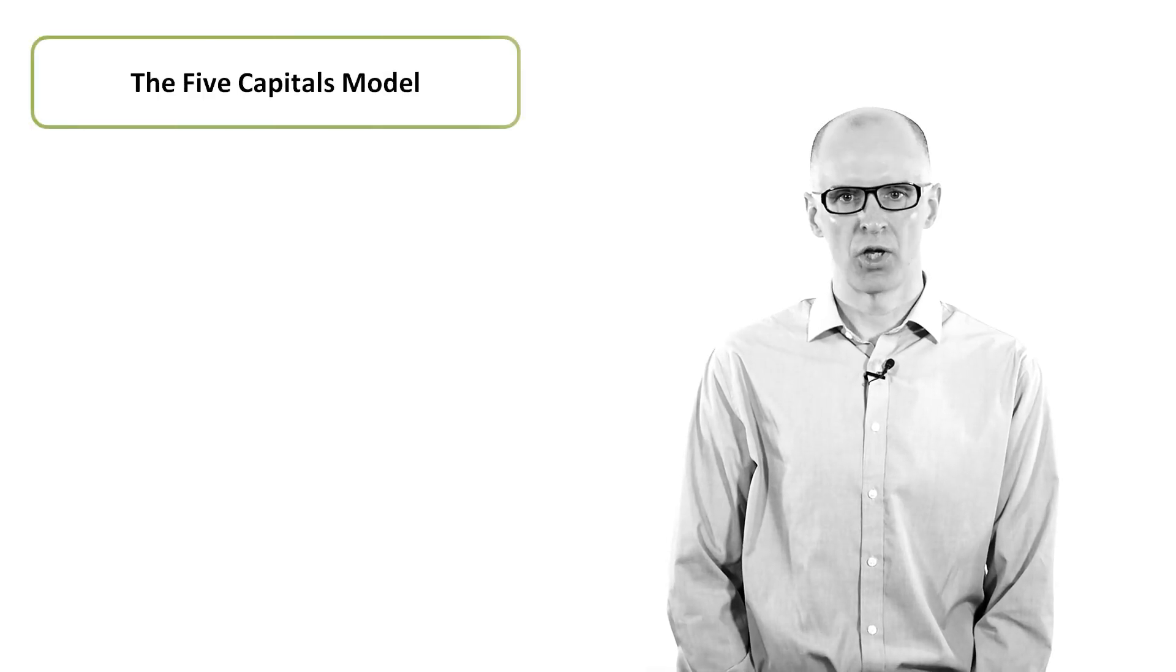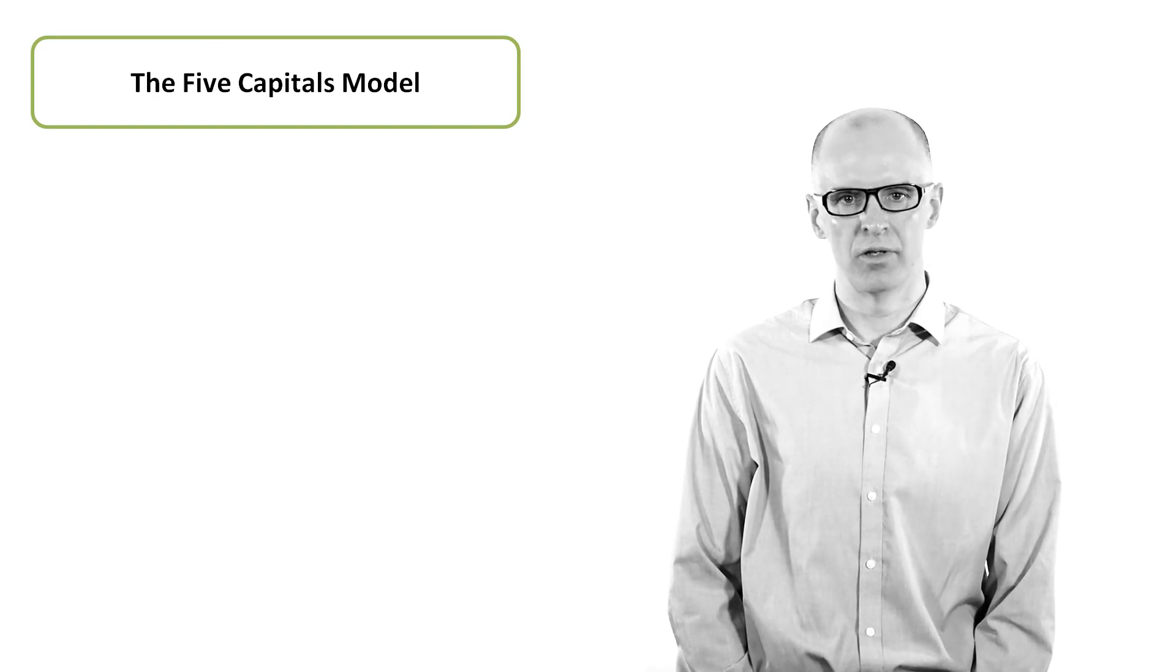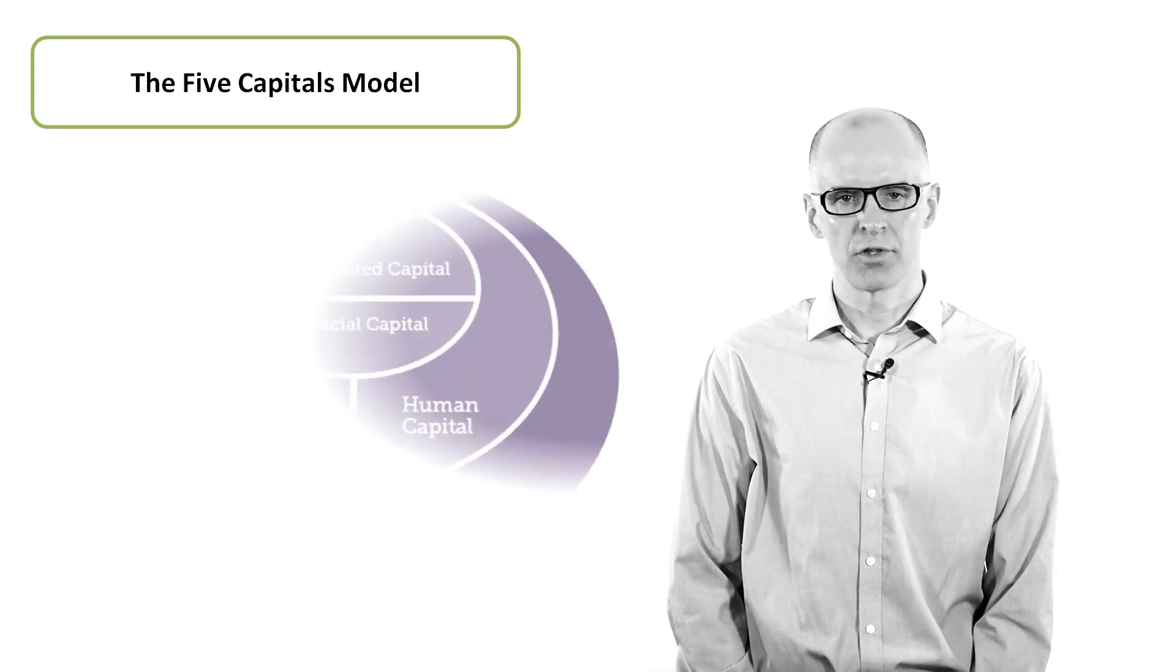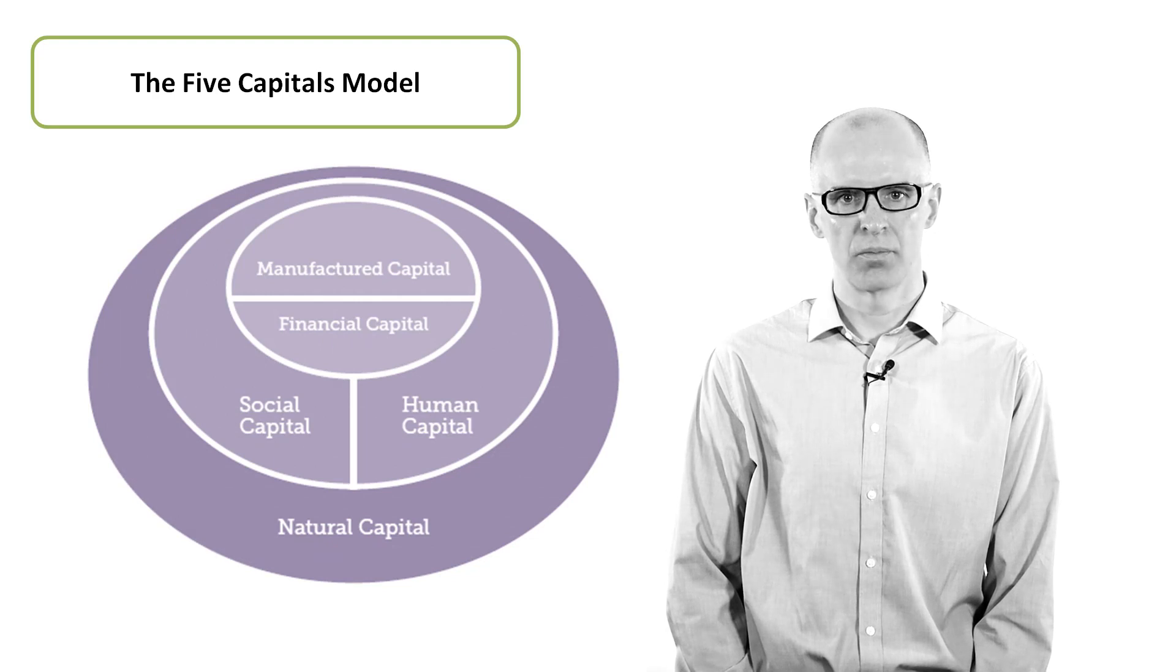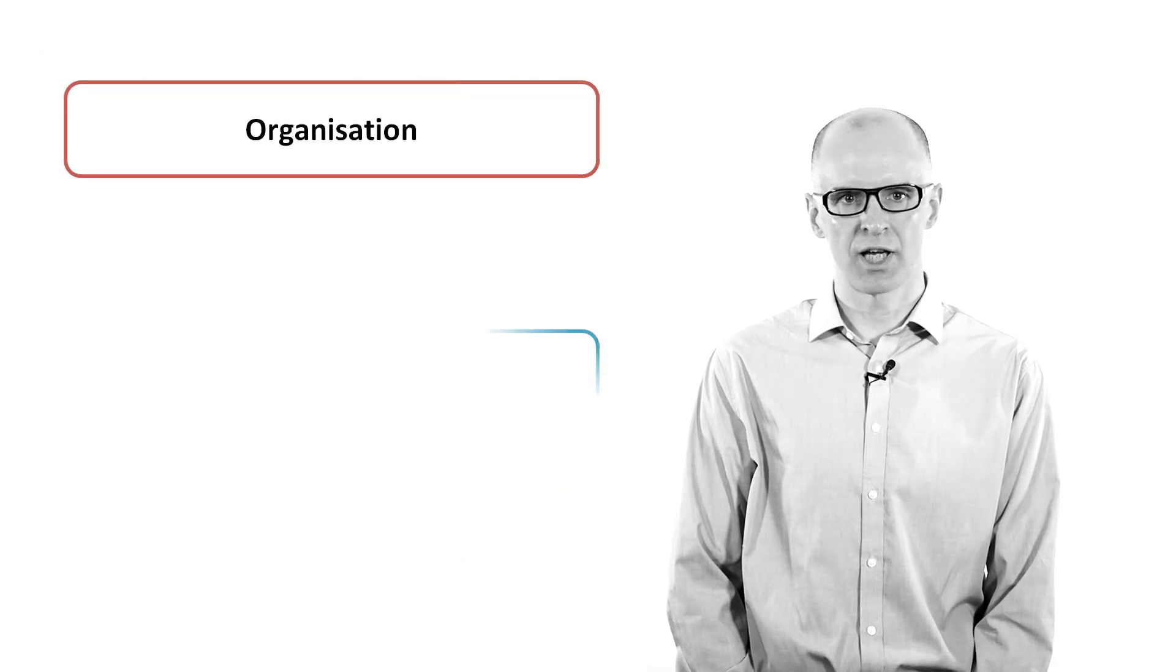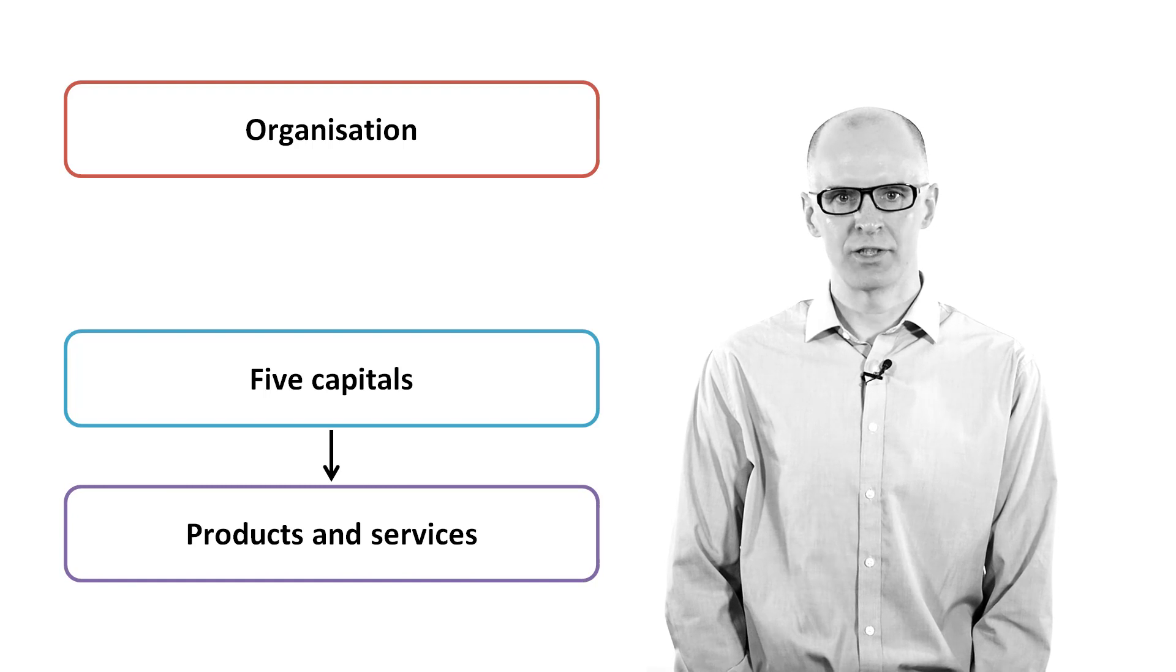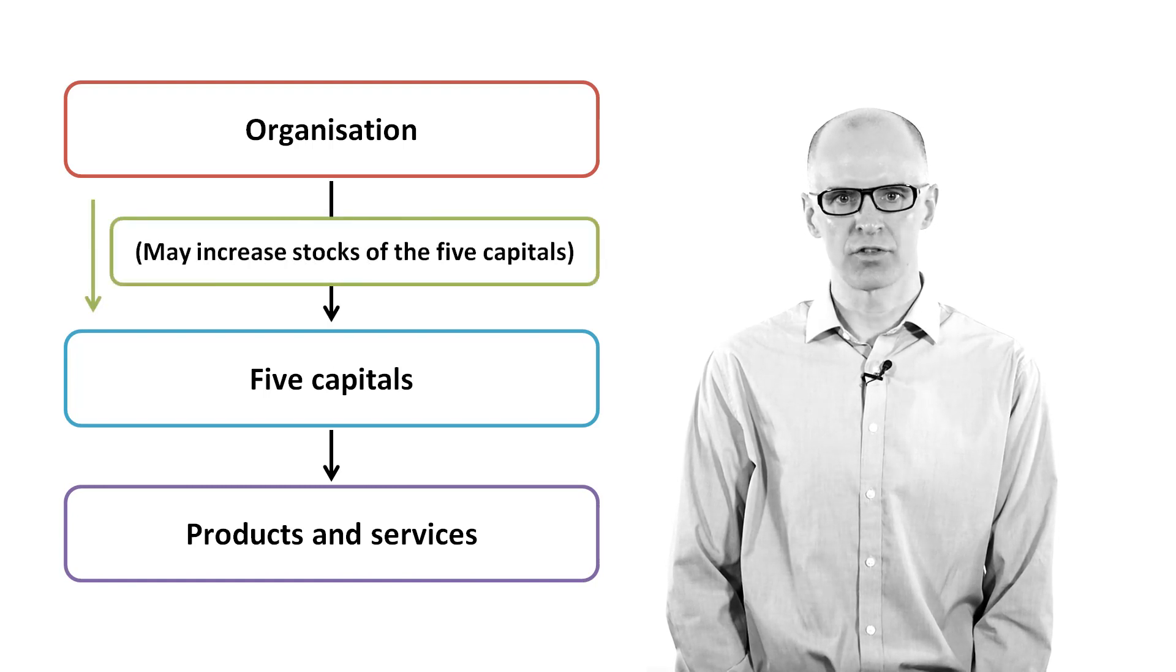The five capitals model introduces a number of stocks that have the potential to deliver sustainable economic development. The capitals are financial, natural, manufactured, human, and social. An organisation may use such capitals to deliver products or services and will maintain and possibly increase stocks of each capital rather than deplete them.